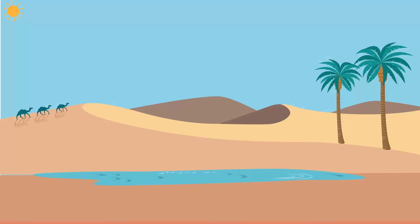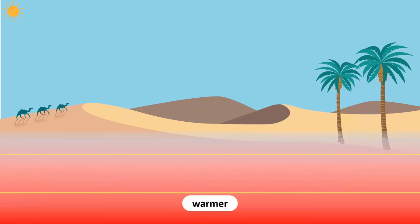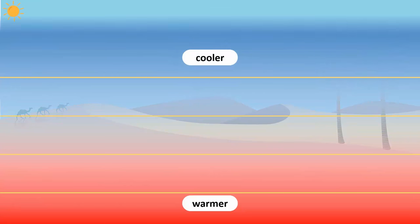On a hot day, the land heats the layers of air closer to it. However, as we move higher, the layers of air get relatively cooler.